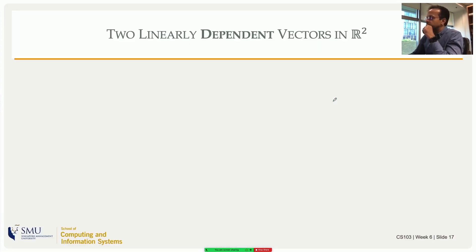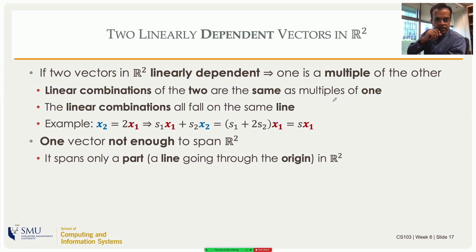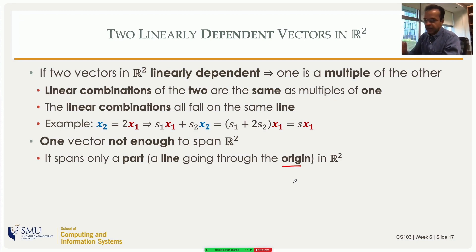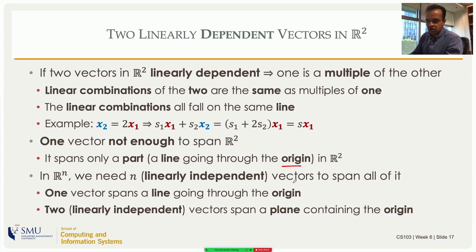So with two linearly dependent vectors in R2 — where one is a multiple of the other — one vector by itself is not enough to span all of R2; it spans only a line through the origin. Two linearly dependent vectors effectively give you only one, since the second is a scalar multiple of the first, defining the same line through the origin. That is not enough to span all of R2.